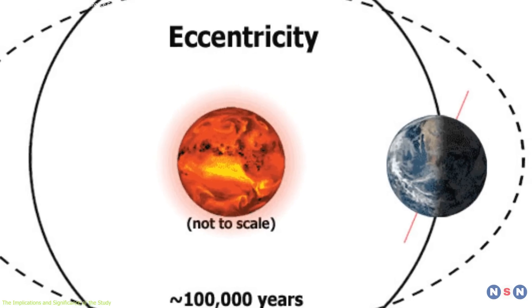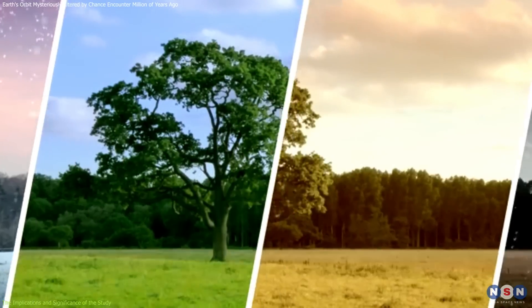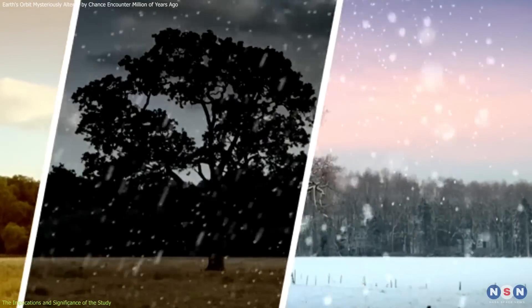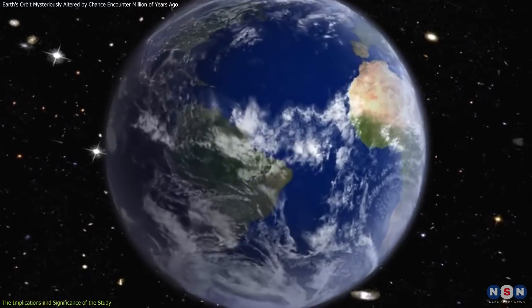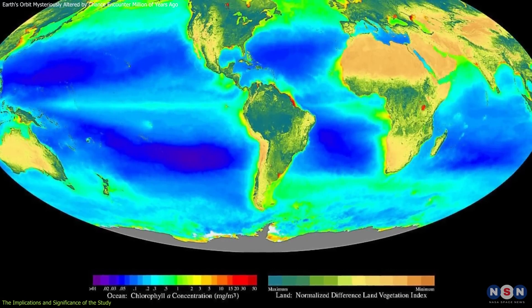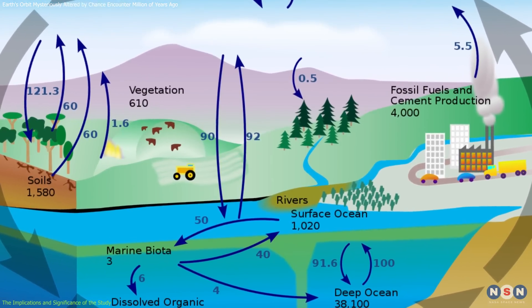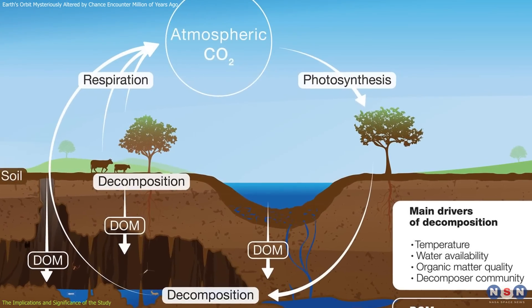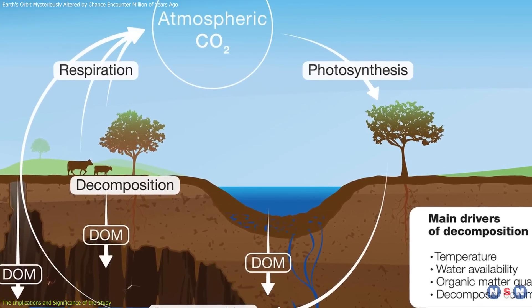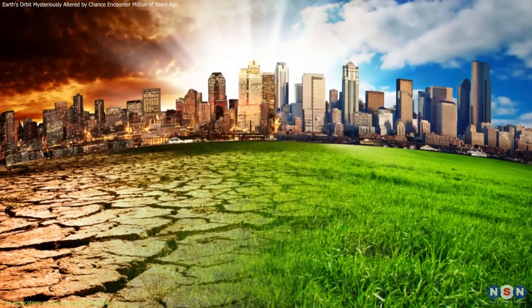For example, a higher eccentricity could have increased the seasonal contrast between summer and winter, and a higher inclination could have changed the distribution of sunlight between the hemispheres. These changes could have triggered feedback in the carbon cycle, such as the release of methane from the ocean floor or the decomposition of organic matter on land, that could have amplified the warming effect.